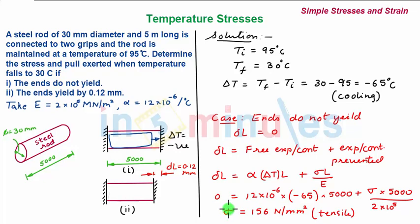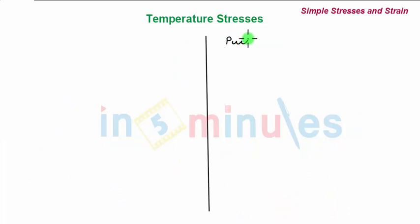Hence we get the value of sigma as tensile stress 156 Newton per mm square. The corresponding pull exerted or force exerted will be given as sigma into A. Sigma is 156 Newton per mm square multiplied by area, pi by 4 into 30 squared. This comes out to be 110.26 kilonewtons.